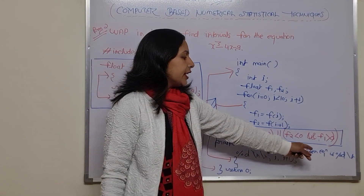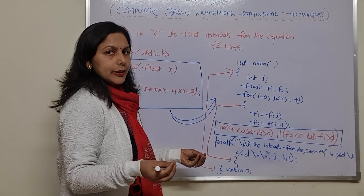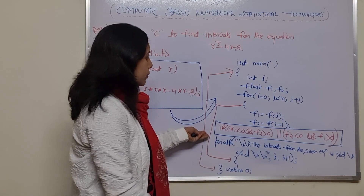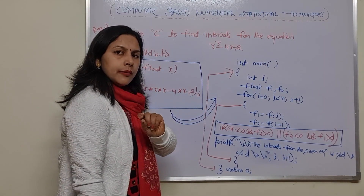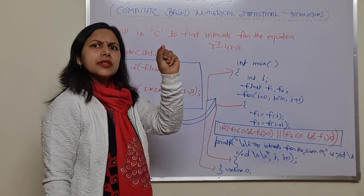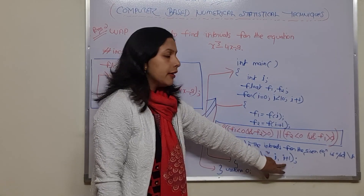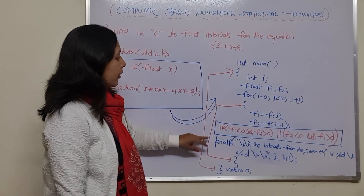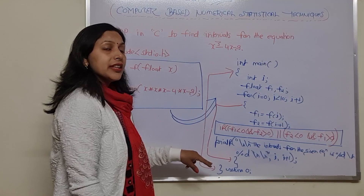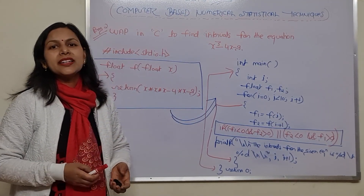Then printf: 'The intervals for the given equation is %d' — because we are printing the intervals as an integer type value. So the total intervals would get selected and printed to the screen. In the range 0 till 10, we are getting the interval that is 2 comma 3, so it would get printed — that is i and i plus 1. After that, this for loop would be closed, and then your main function would be closed. You would run your program and get the intervals for the given equation x cubed minus 4x minus 9.